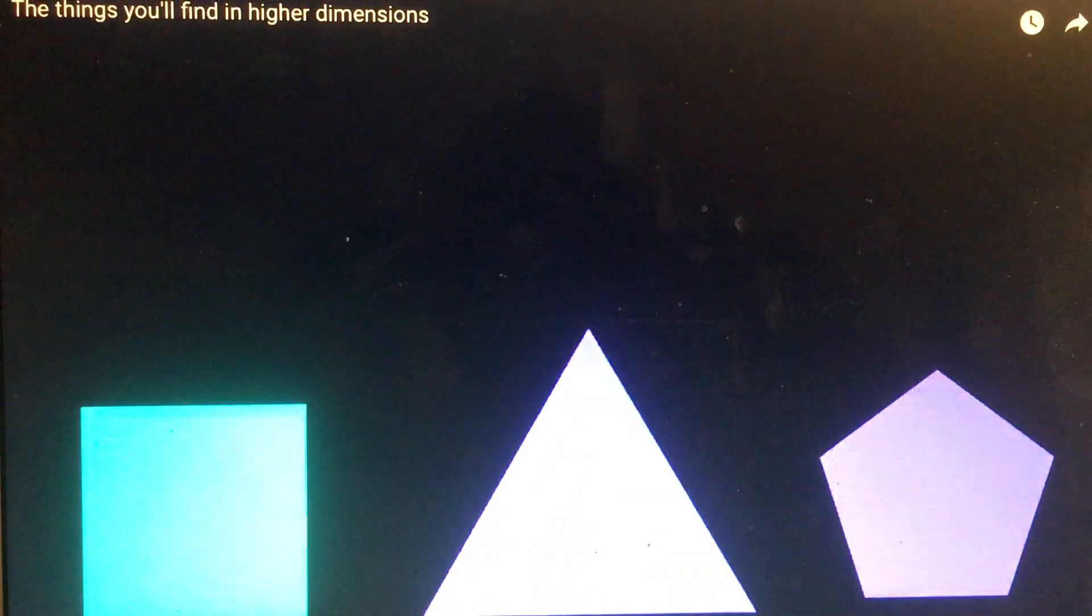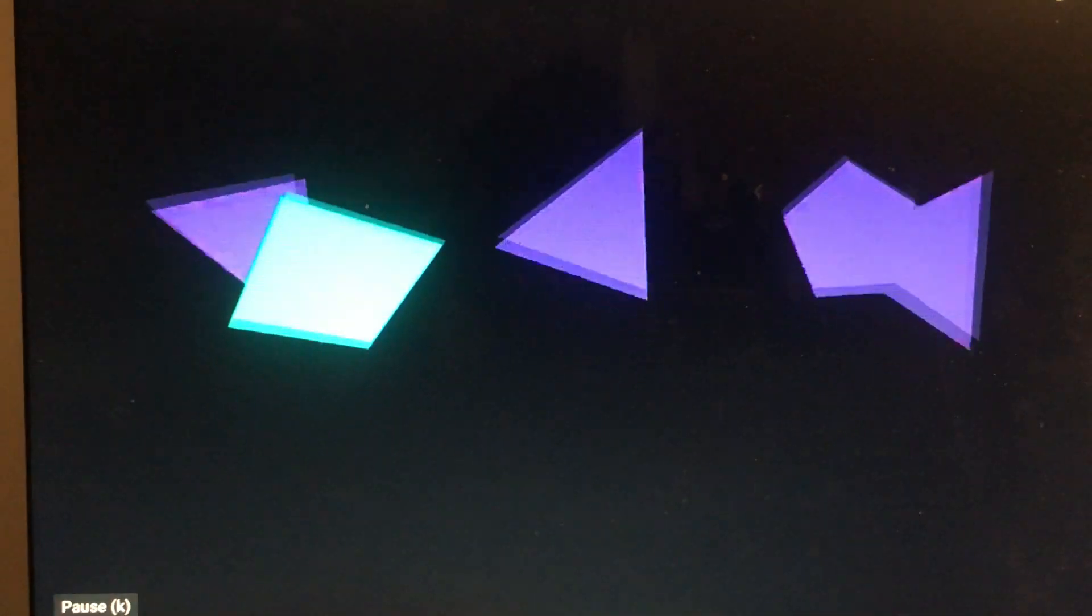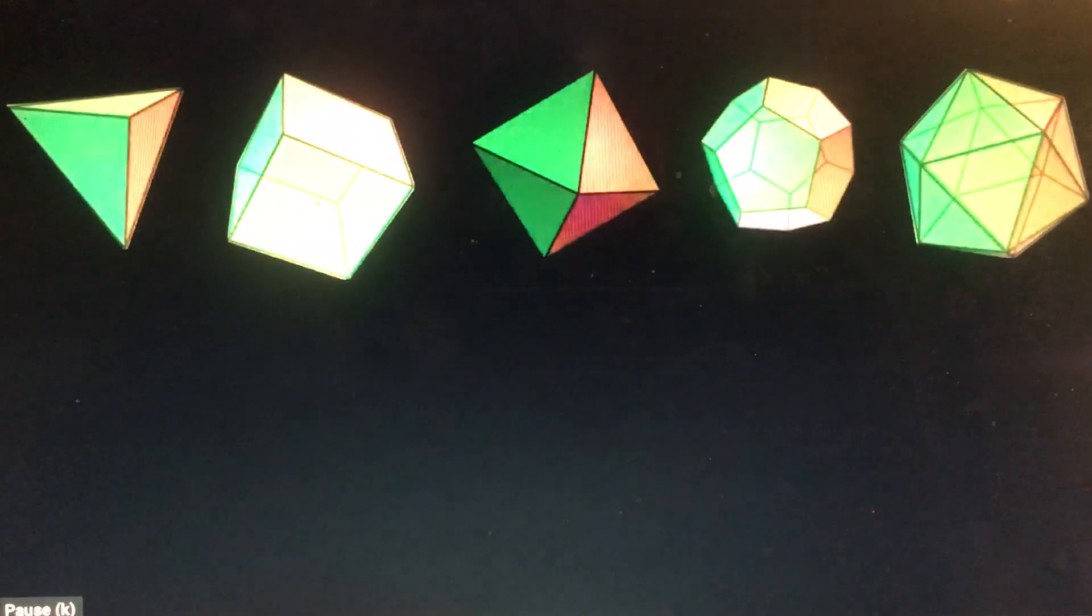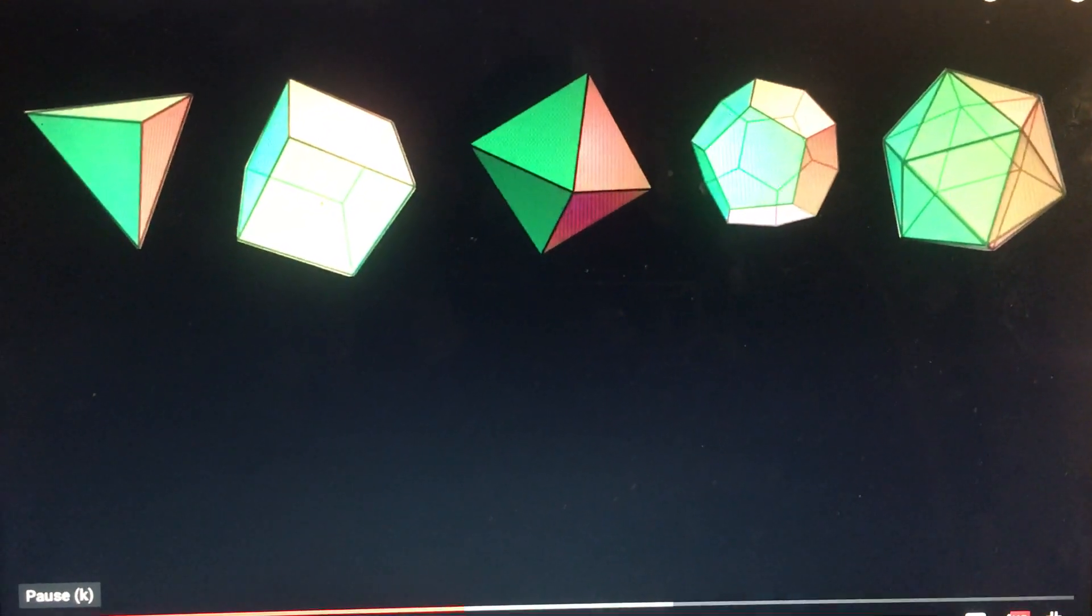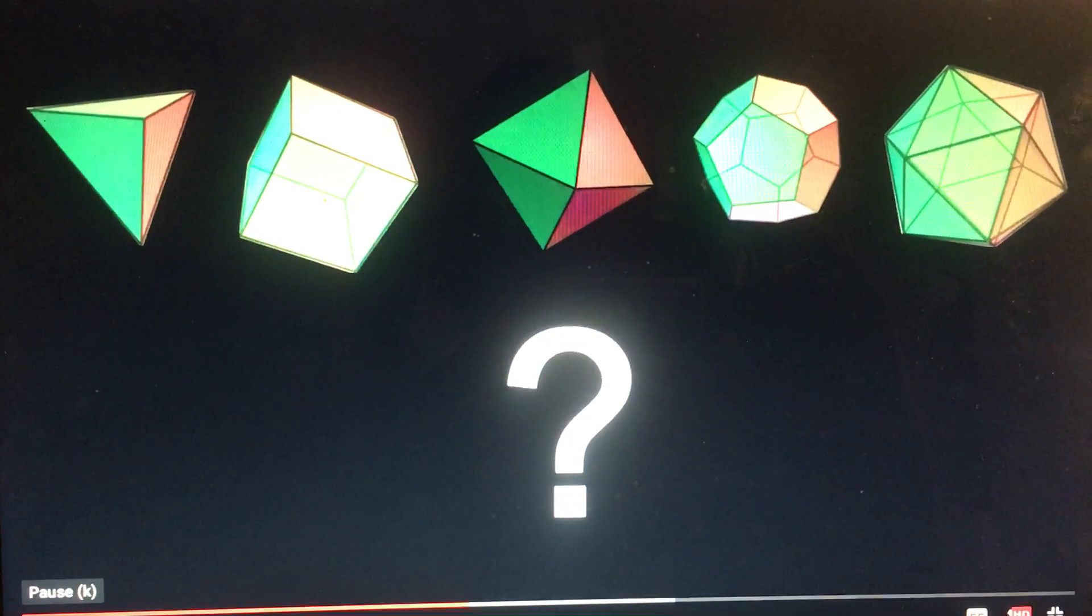Same criteria we discussed earlier. We saw before how only a few regular polygons could be put on the faces of those Platonic solids. But can we connect these shapes to each other in the fourth dimension to create 4D dice?